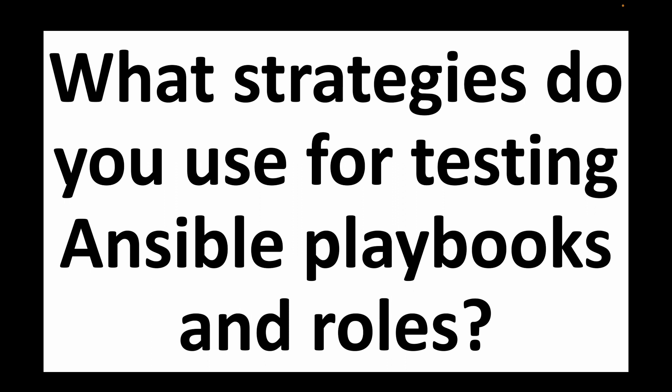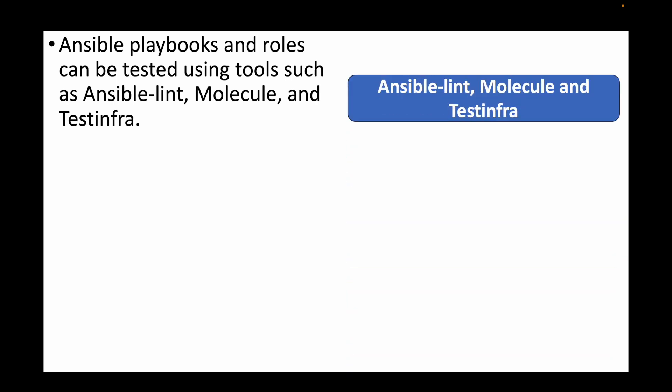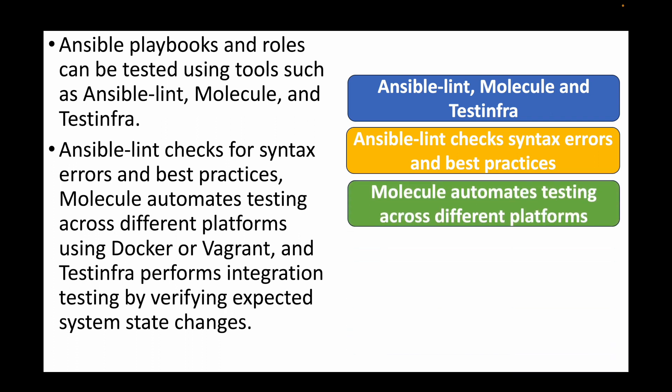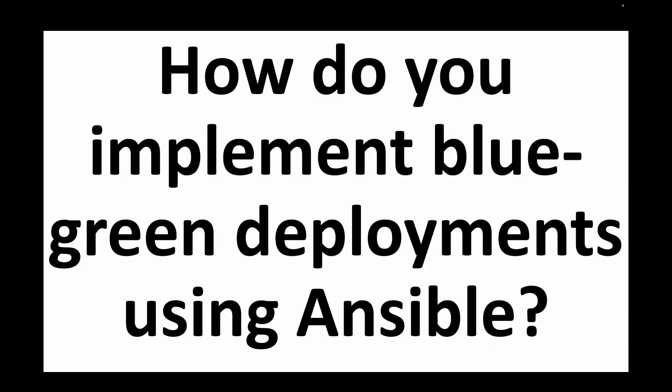The next question is: what strategies do you use for testing Ansible playbooks and roles? We have tools like Ansible Lint, Molecule, and Test Infra that can be used to test our Ansible playbooks and roles. Ansible Lint checks for syntax errors and best practices. Molecule helps automate testing across different platforms like Docker or Podman. Test Infra helps perform integration testing by verifying expected system state changes.